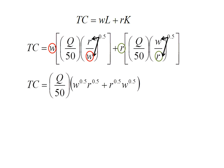Doing that, I collect the Q over 50 out in front and I get W to the 0.5 times R to the 0.5 plus R to the 0.5 times W to the 0.5. Those two terms, I can just change their order and there's two of them when I add together.